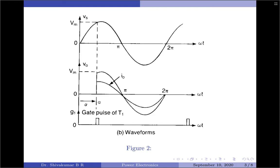The output can be varied by varying the triggering angle alpha. Due to the presence of diode D1, the control range of this converter is limited, and the effective RMS output voltage can only be varied between 70.7% and 100%. Further, since the output load voltage can be controlled only during the positive half cycle, the output voltage and input current are asymmetrical and hence contain a DC component.